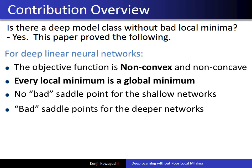More concretely, this paper proved the following statements. For deep linear neural networks, the objective function is non-convex and non-concave. But this paper proved that every local minimum is indeed a global minimum, so we don't have a problem of getting stuck near a local minimum.